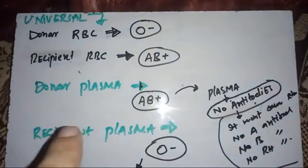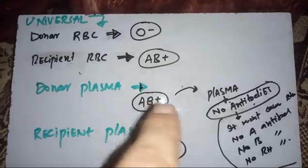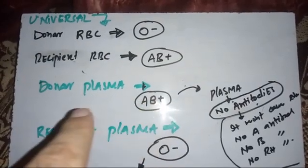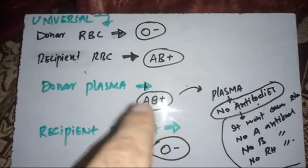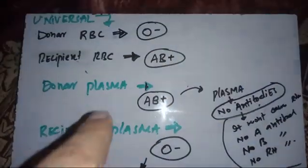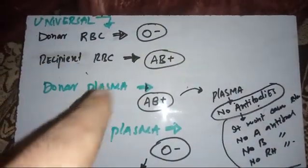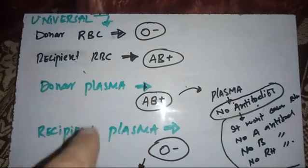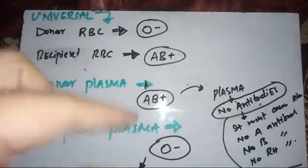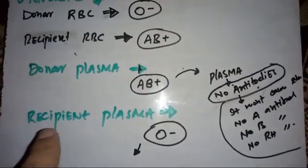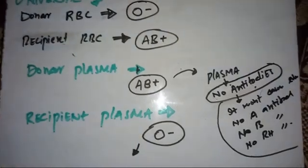We need a blood group with no anti-A, no anti-B, and no anti-Rh antibodies. The AB positive blood group is the only blood whose plasma is free of all these antibodies. AB positive has A antigen, B antigen, and Rh antigen on the RBC, but if we take the plasma, it is free from any antibodies. Since there are no antibodies in AB positive plasma, and those antibodies would otherwise act as antigens, the plasma of AB positive can be given to anyone without causing a reaction.